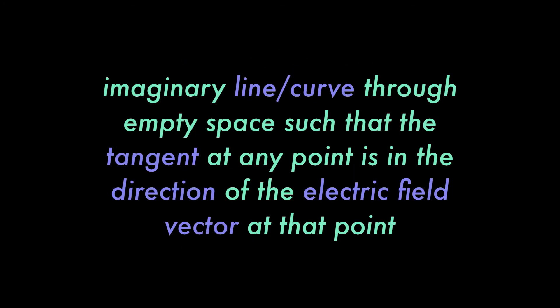So what is an electric field line? Well an electric field line is basically an imaginary line through a region of empty space such that if you were to pick any point along this imaginary line, the tangent to that point would be in the same exact direction as the electric field vector at that point.